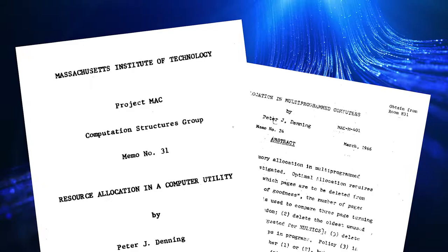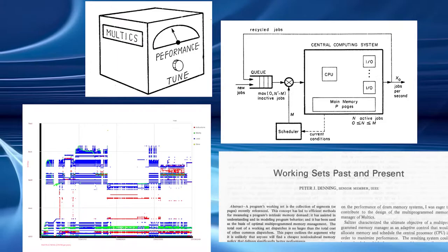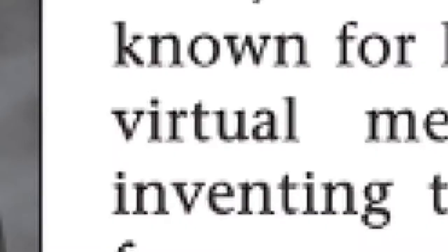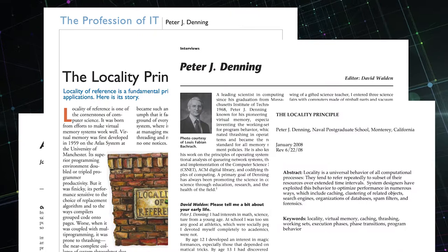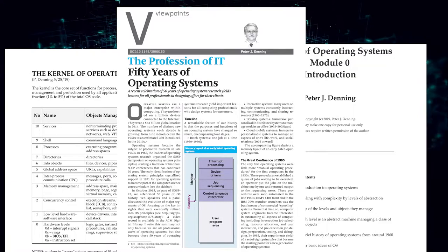In the mid-1960s, virtual memory's performance was viewed as untrustworthy and prone to unpredictable thrashing. Dr. Denning created a new paradigm for virtual memory based on measuring the intrinsic memory demands of individual programs and his discovery of the principle of locality, which became a universal law of computing. These discoveries enabled the success of virtual memory on Multics and on commercial operating systems. Every modern operating system uses the working set model to underpin its approach to memory management.